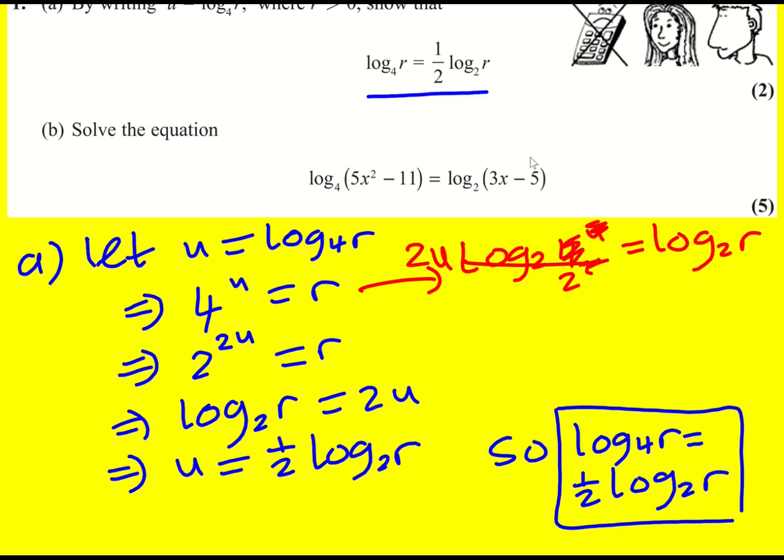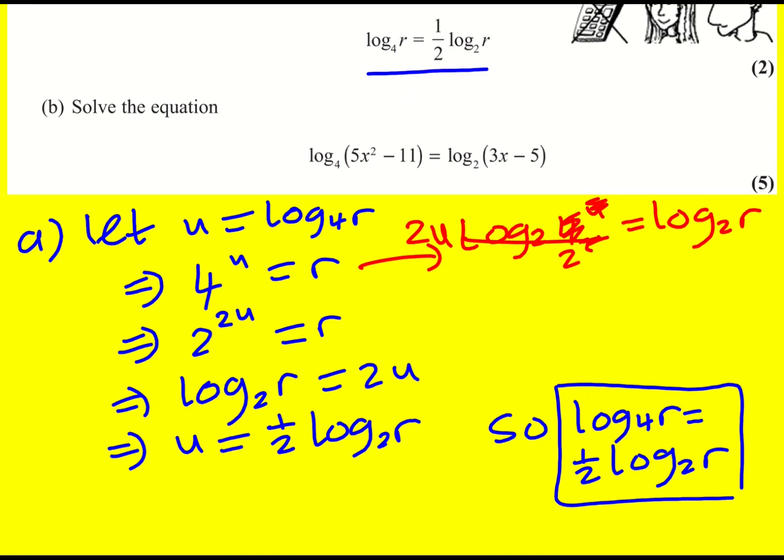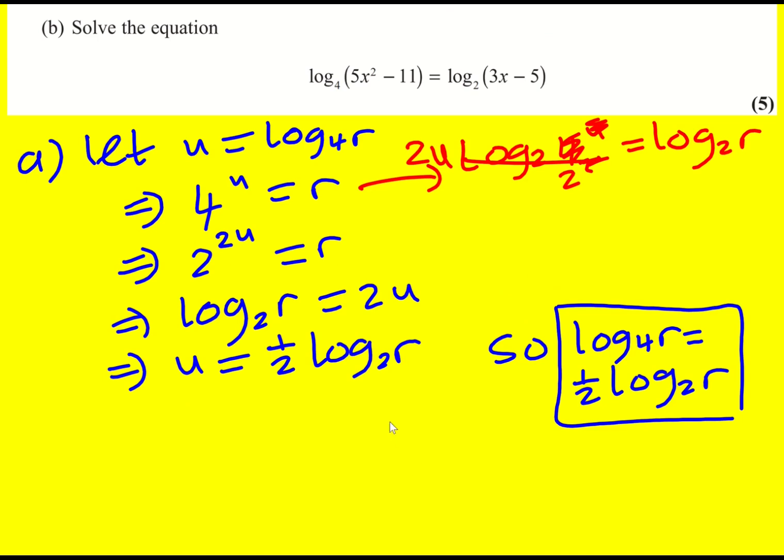For part b we're then asked to solve this equation and we're going to use part a to help us. So let's write it down log to base 4 of 5x squared minus 11 is equal to log to base 2 of 3x minus 5.